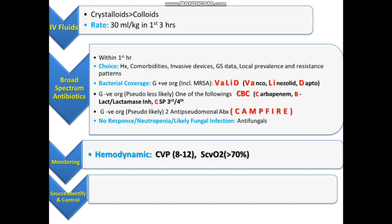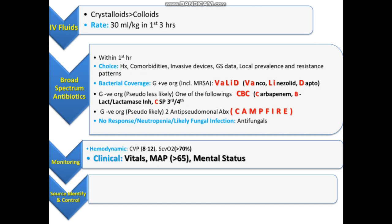Clinical monitoring includes vitals — blood pressure, temperature, respiratory rate, and pulse rate. We also need to monitor the mean arterial pressure; the target MAP should be more than 65. Mental status of the patient should also be monitored.